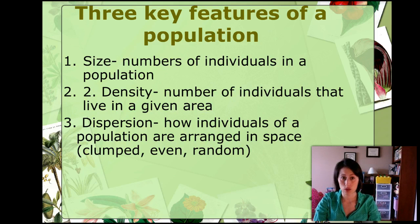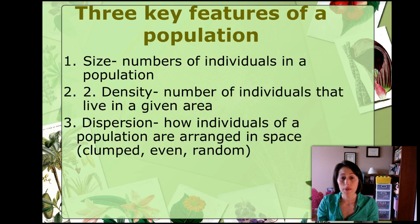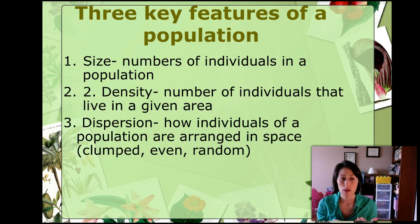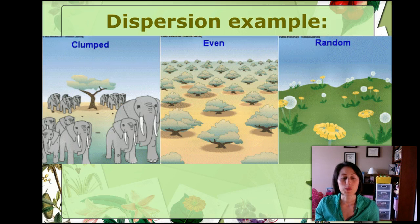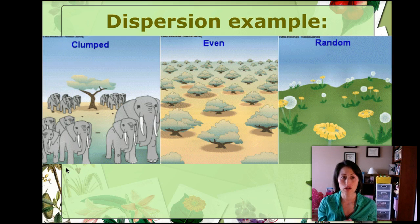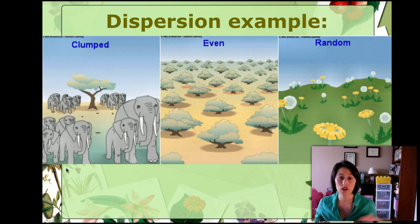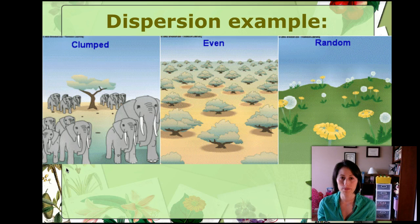Dispersion is looking at how individuals of a population are arranged within a space. There are three different types of dispersion: clumped, even, and random. A clumped population is where organisms tend to live in groups or herds. This example shows elephants — elephants live in herds, and there can be many different herds within a large ecosystem. That is a clumped population.